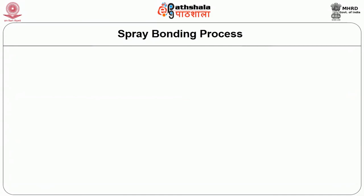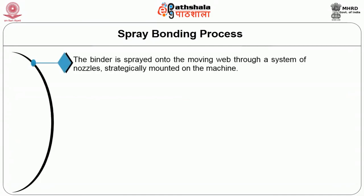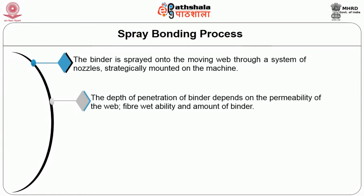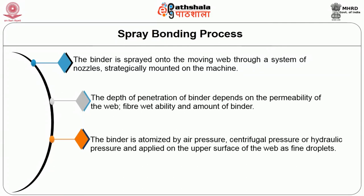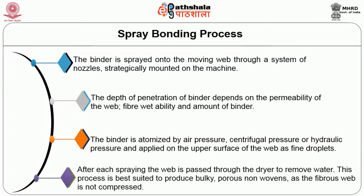The spray bonding process: in this process, the binder is sprayed onto the moving web through a system of nozzles strategically mounted on the machine. The depth of penetration of binder depends on the permeability of the web, fiber wettability, and the amount of binder. The binder is atomized by air pressure, centrifugal pressure, or hydraulic pressure, and applied on the upper surface of the web as fine droplets. After each spraying, the web is passed through a dryer to remove excess water. This process is best suited to produce bulky, porous non-wovens as the fibrous web is not compressed.